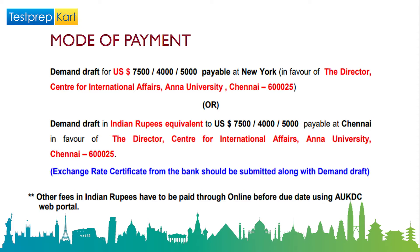You need to prepare a demand draft for whichever course you are enrolling in — USD 7,500 for UG, USD 4,000 for PG, or USD 5,000 for the integrated five-year course — drawn at New York, in favor of the Director, Center of International Affairs, Anna University, Chennai 600025. If paying in Indian rupees, frame a DD for the equivalent amount, also payable at Chennai in favor of the same authority.